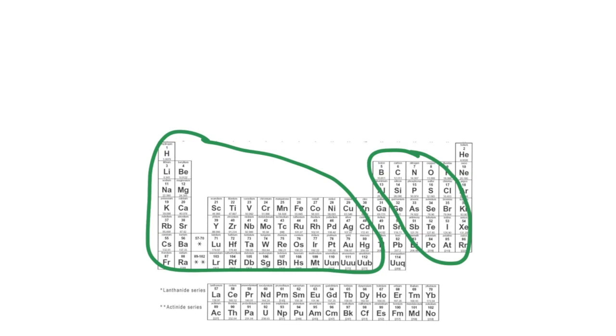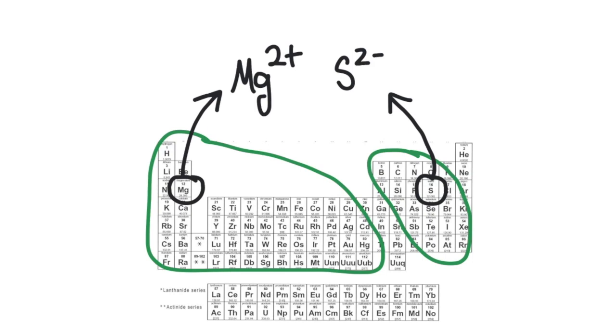What happens is the metal, for example magnesium, is going to turn into an ion. Magnesium is in group 2, so it's going to turn into a 2+ ion, and a non-metal like sulfur will turn into an anion, which is an ion with a minus charge, so we get the sulfide ion. Those are going to react together, those charges are going to balance and attract to each other, and we're going to end up with an ionic compound. In this case we'll get magnesium sulfide.